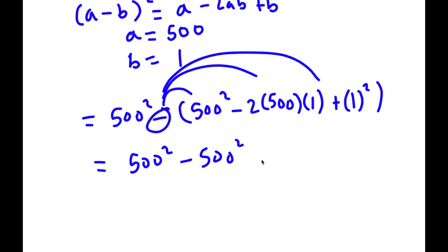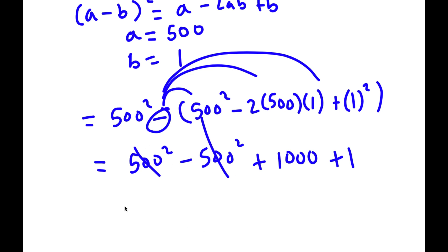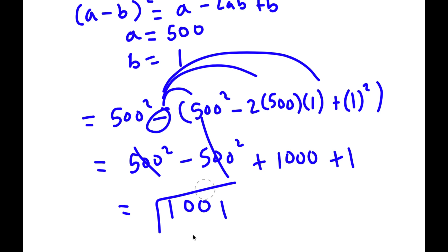Then I have negative of negative, which is positive: 2 times 500 is 1000, and 1000 times 1 is 1000. And then I have 1 squared, which is simply 1. Now 500 squared and 500 squared cancel out, and I'm left with 1000 plus 1, which is simply 1001.